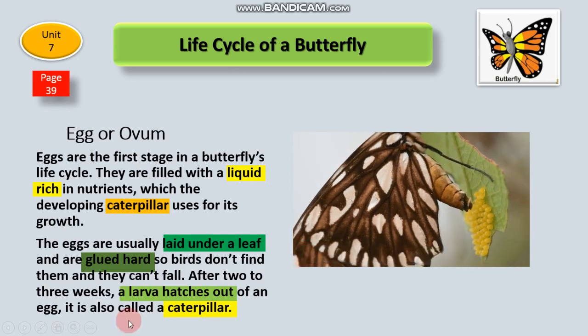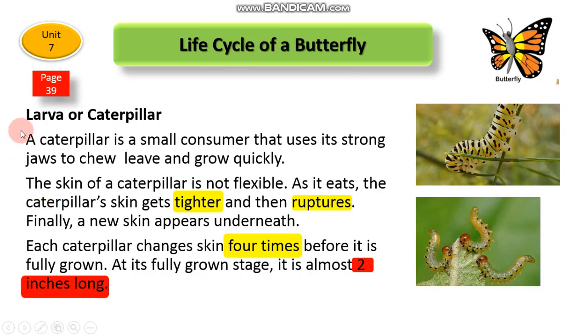A caterpillar is a small consumer that uses its strong jaws to chew leaves and grow quickly.